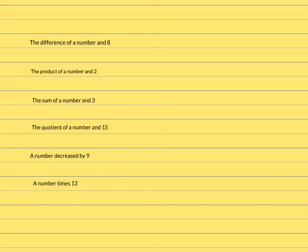Let's look at this first one: the difference of a number and eight. I'm going to underline the word difference, and that is going to mean subtraction. A number — that's going to be your x or your variable. I tend to stay away from O, I, and L, just because they look like zeros and ones. I tend to go with x's or n's, but if they specify a variable, you need to use that one. So the difference of a number and eight — difference means subtraction — gives us x minus eight. There's your expression.